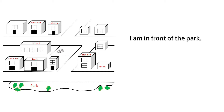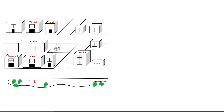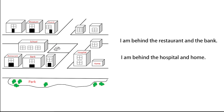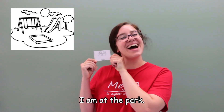I am in front of the park. I am next to the hospital. Where am I? Home — I am home. I am behind the restaurant and the bank. I am behind the hospital and home. Where am I? Park — I am at the park.